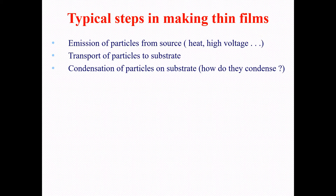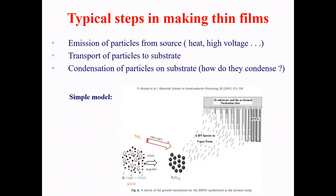First, we will explain these steps using a sample model from one of our published papers in a reputed journal — Materials Science and Semiconductor Processing, published by Elsevier. The first step is emission of particles. We have the precursors, and what we do is heat these precursors to a temperature of up to 1200 degrees centigrade in a tube furnace. This converts them into vapor, which is the emission of particles from the source.